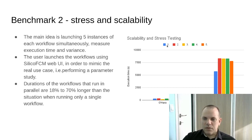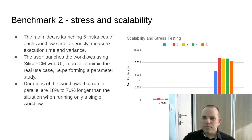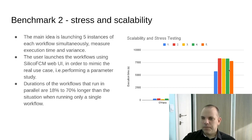We then put the platform into stress testing, defined as launching five distinct instances of each workflow at the same time. Using EC2 Spot instances, the slowdown was obvious but not a showstopper. The platform was really stable, and this asynchronous functional engine server backed by Toil works really well, as we can see here.